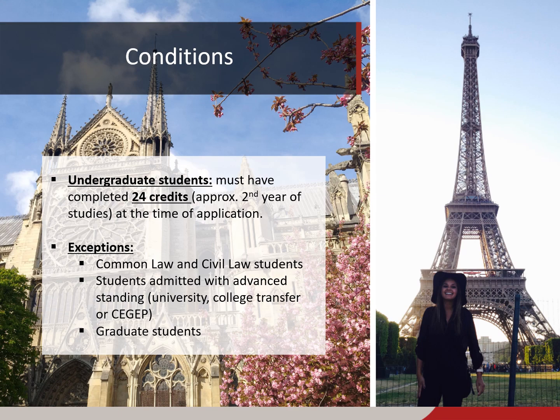Generally, students at the undergraduate level are eligible to apply as of their second year of program. Students applying would travel to their host country during the following academic year. For example, Paul, who is a second year student in history, applies during the winter term of his second year and travels abroad during the fall term of his third year of program.